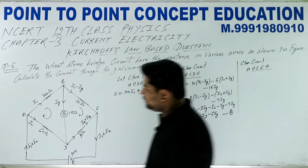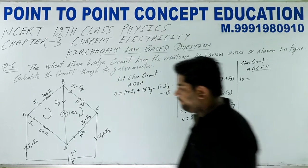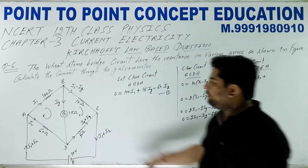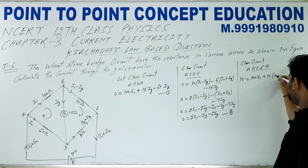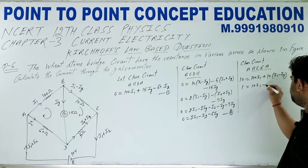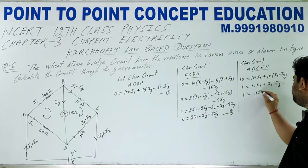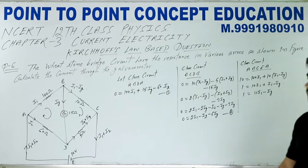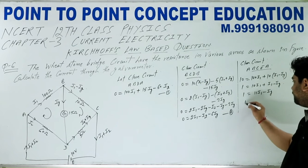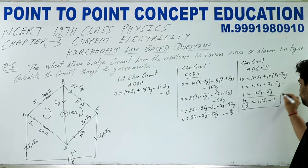तीसरा equation बनाओ। Circuit ABCEA में external battery या cell लगाया गया है — 10 volt का। Current direction में पहला resistance 100, current flow कर रहा है I1, plus 10, current flow कर रहा है (I1 - IG)। Solve कीजिए, 10 से divide: 100·I1 + 10·(I1 - IG) = 10, जो होगा 11·I1 - IG = 1। यह है Equation number 3: IG = 11·I1 - 1।